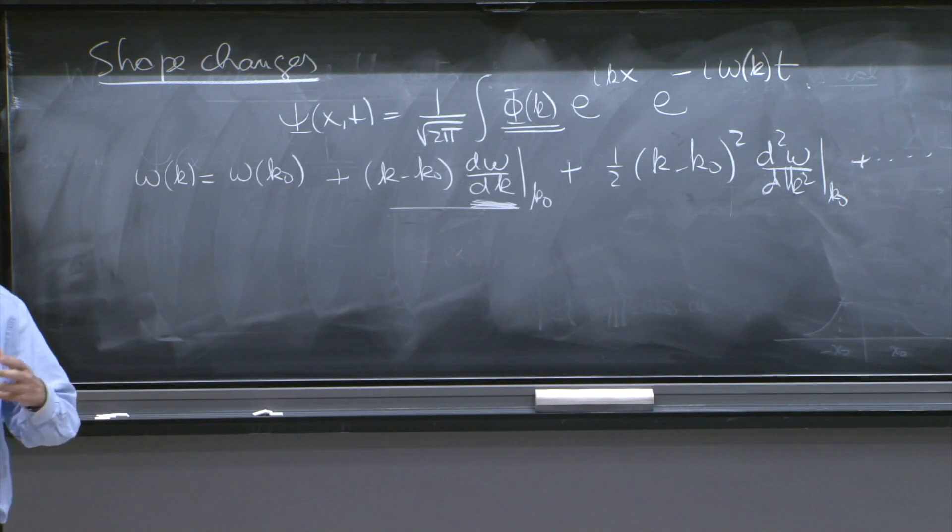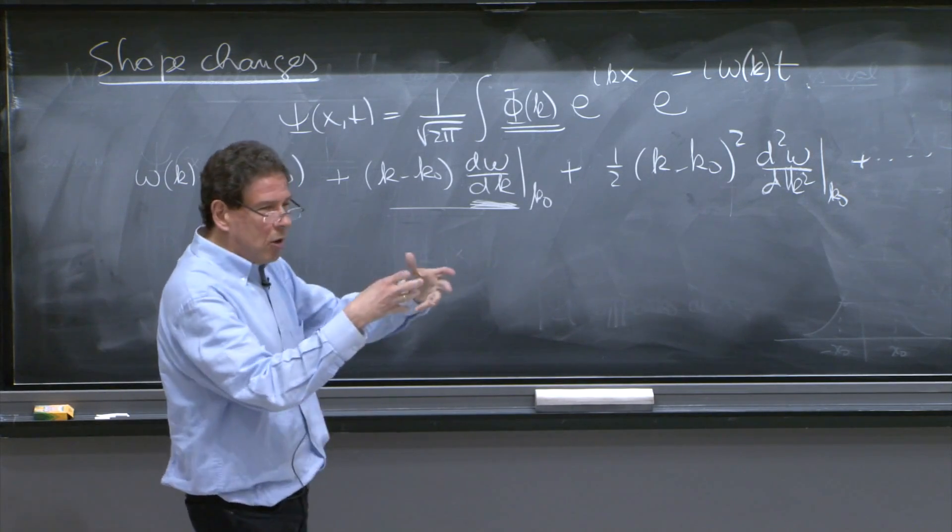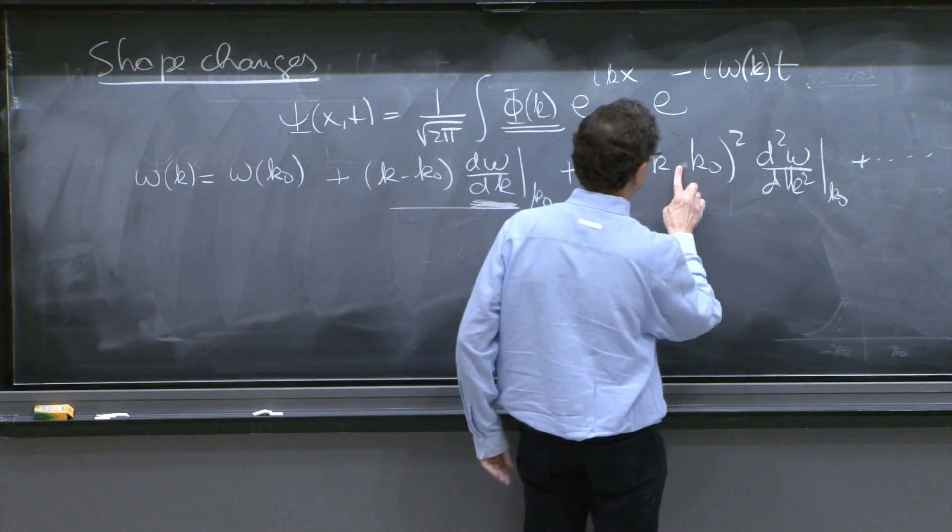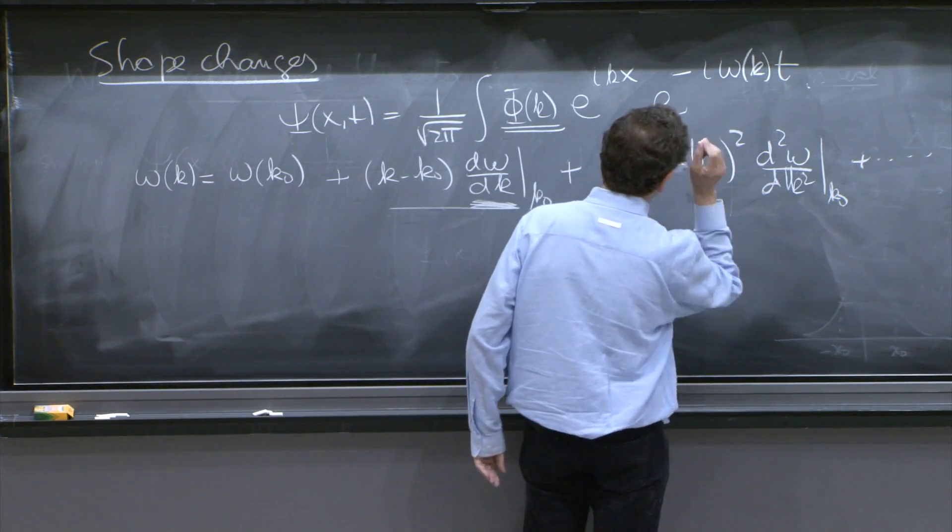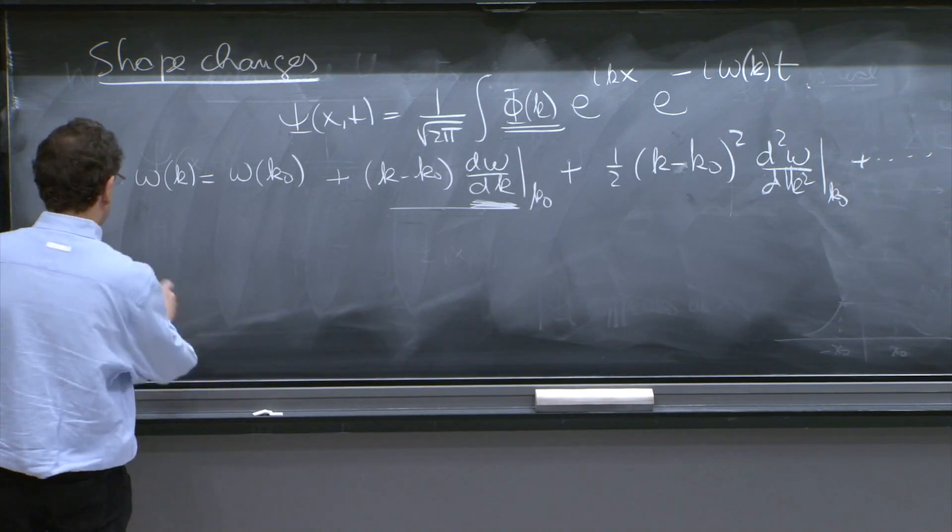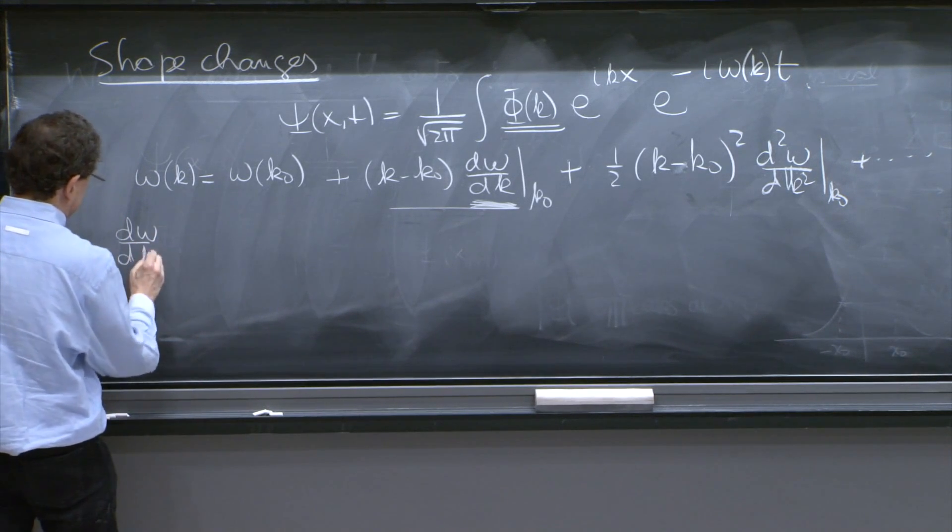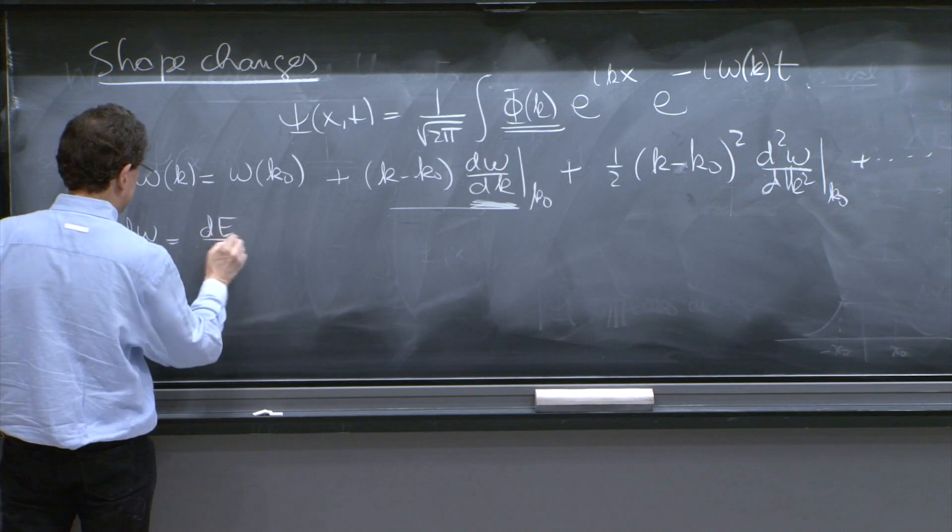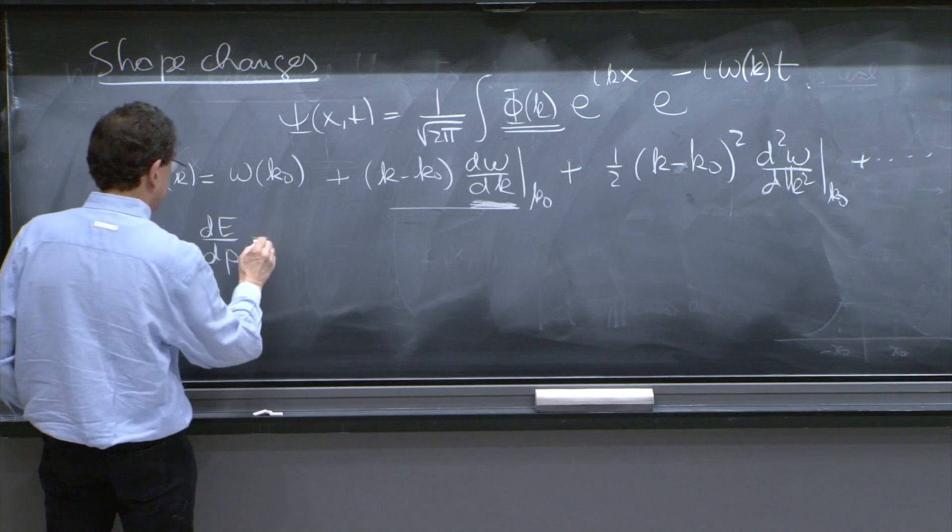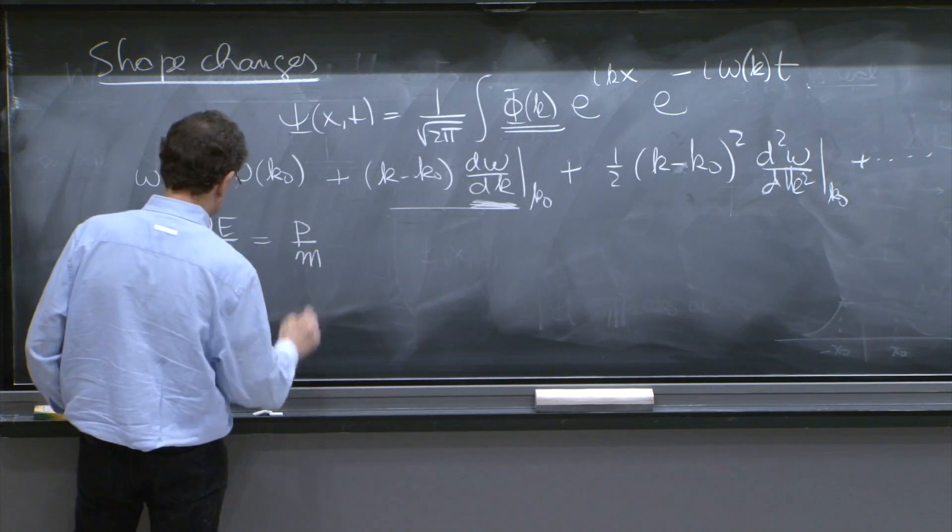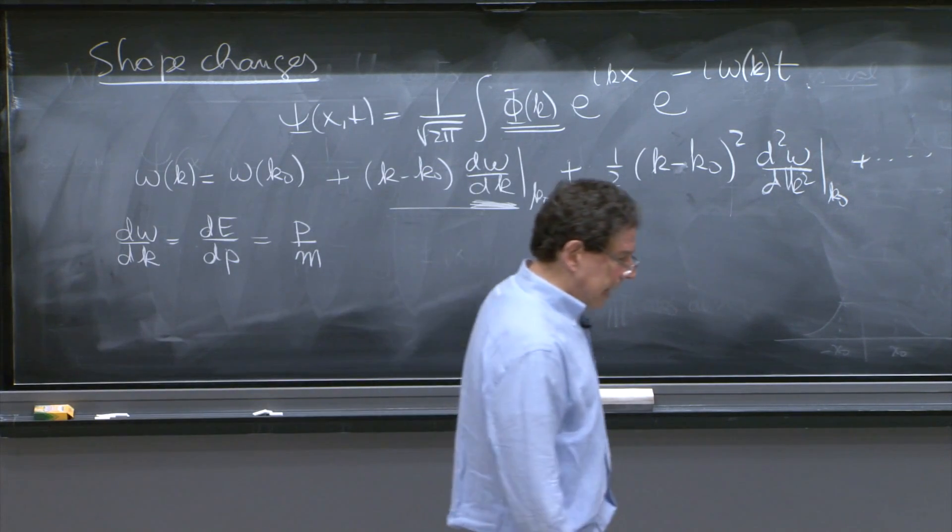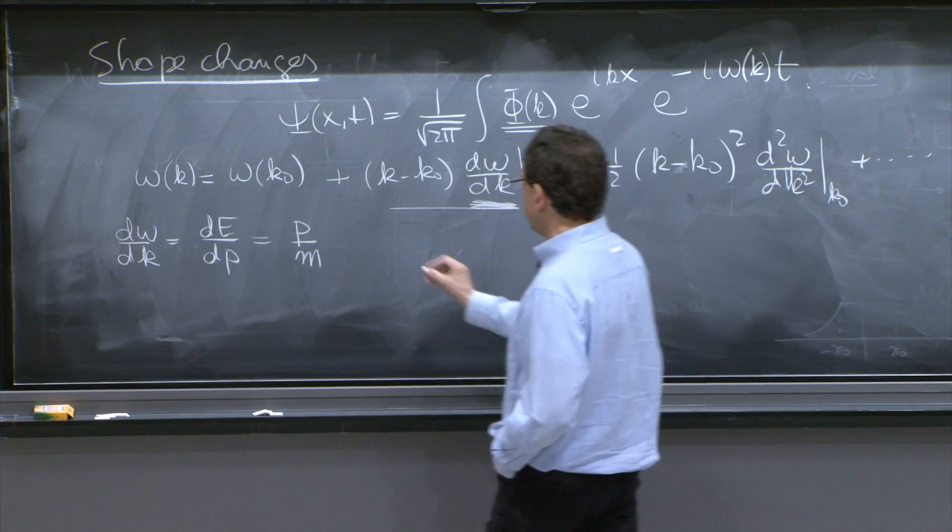It is of interest to know, for example, how long you have to wait before your packet gets totally deformed. We need to recall these derivatives. So d omega dk is the same as dE dp by multiplying by h bar, and this was p over m. dE dp is p over m, and this is equal to h bar k over m.